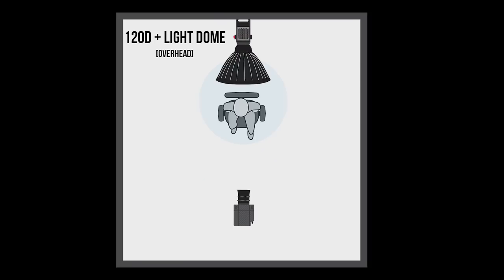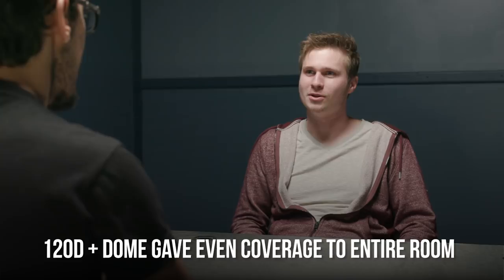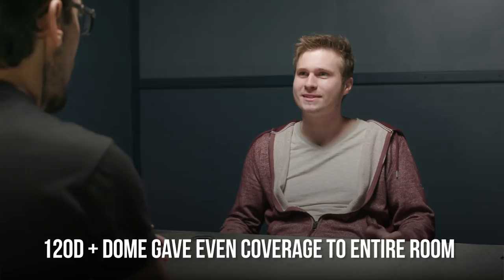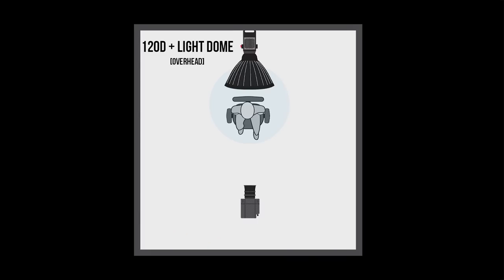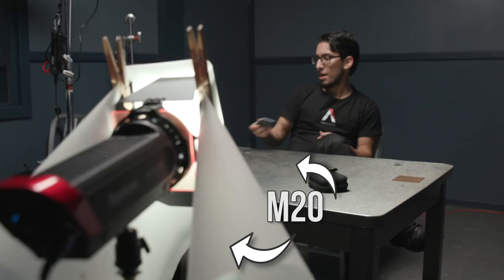The second setup was from Batman: The Dark Knight — the interrogation scene between the Joker and Batman. Our primary light was a 120D with a light dome directly overhead as a topper. What I liked was that the light dome gave us spread all the way across to the walls without needing extra perimeter lights. It did create a little raccoon eyes on the actor, so we added a mini 20 with diffusion and one CTO filter right next to the camera to add a highlight and fill in the eyes.